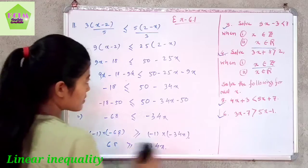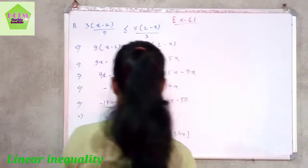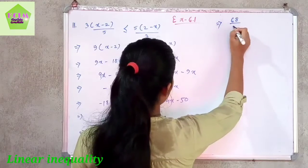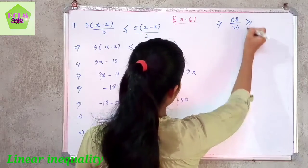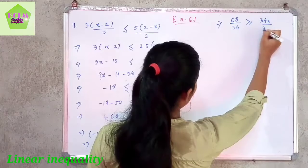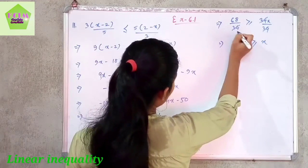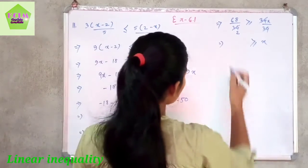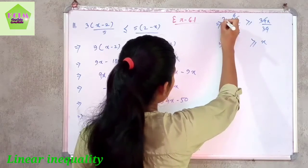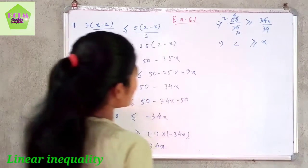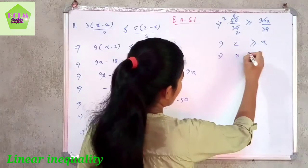Dividing both sides by 34: 68 divided by 34 is greater than or equal to x. Since 68 divided by 34 equals 2, we get 2 greater than or equal to x, which means x is less than or equal to 2.